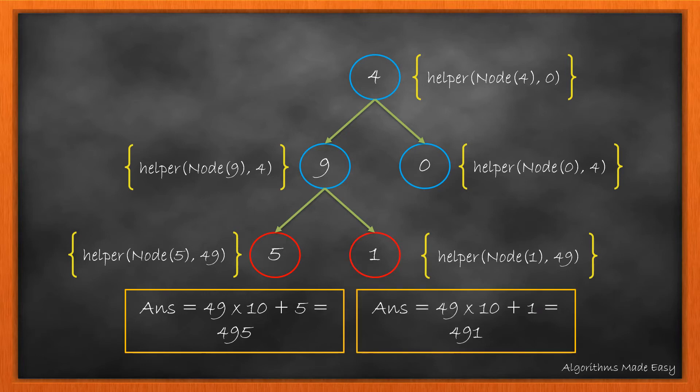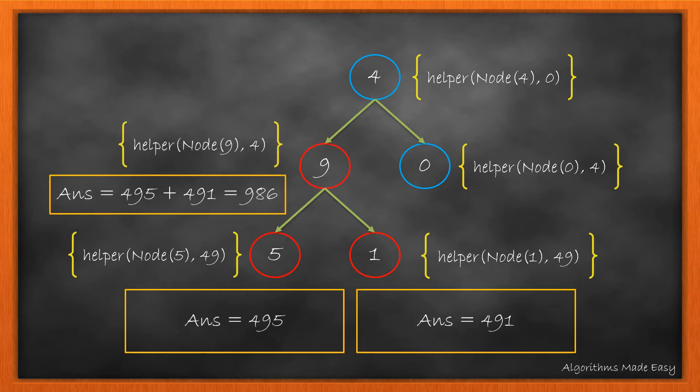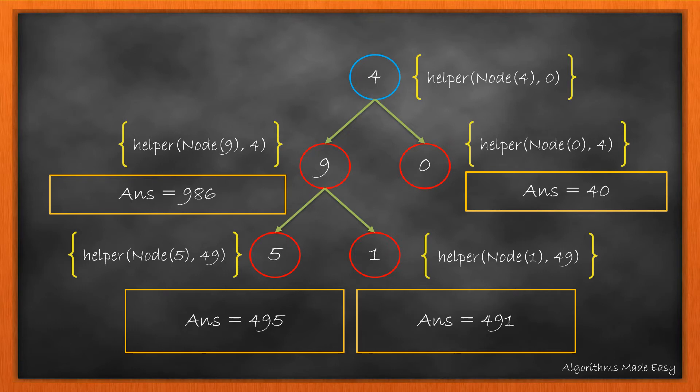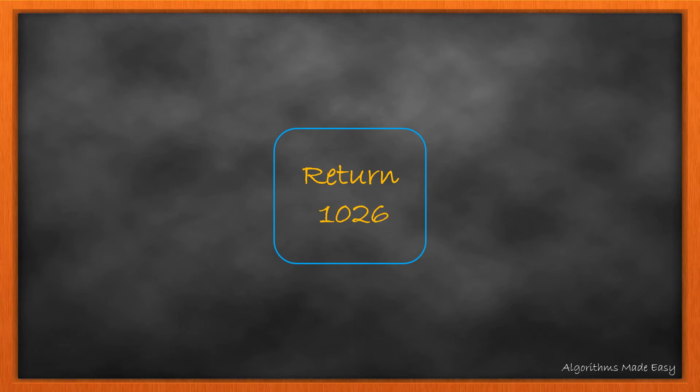Same will happen with the other leaf node. Now as we are done with both subtrees of 9, we add both and return. Same will happen with the leaf node 0. At the end, we add both the results from 9 and 0 and return the final result 1026.